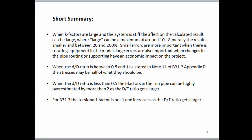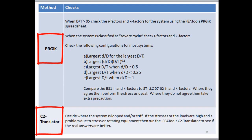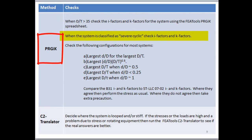Let's simplify these observations and decide what to do. There are two programs we want to know when to run. Generally, we want to run the PRG-IK spreadsheet when the D over T ratio is greater than about 35. In these cases, we start to see higher I's and higher K's that might not be consistent and where more applicable data may be useful. We should compare the I factors and K factors from the existing B31-3 with the more applicable data from PRG-IK, and then decide if we have a problem regarding number of cycles, stiffness of the system, tolerable amounts of error, or rotating equipment.